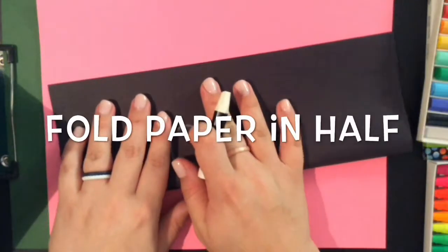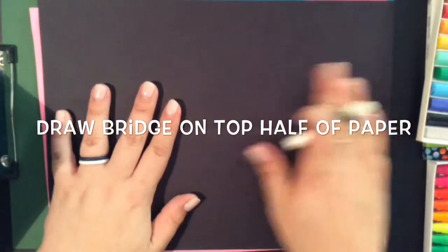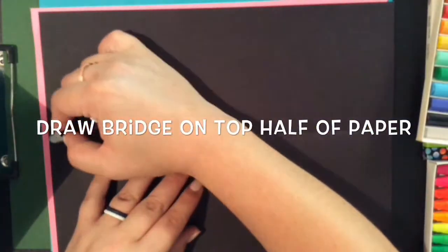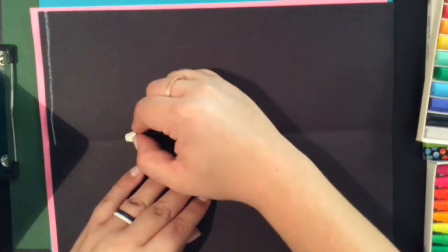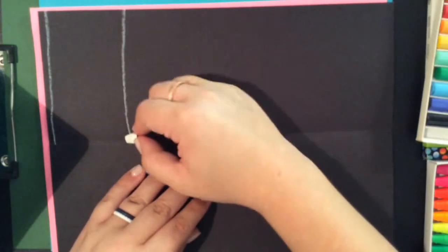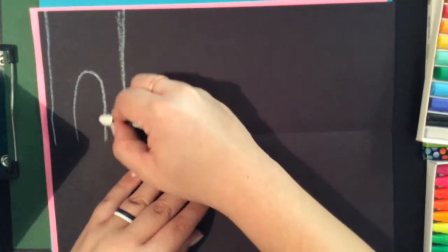Next, you're going to fold your paper in half. We call this hot dog style, and you're going to use a white oil pastel to draw the George Washington Bridge on the top half of the paper.